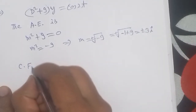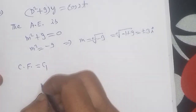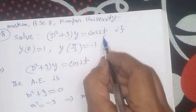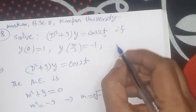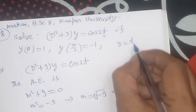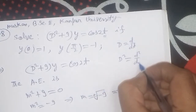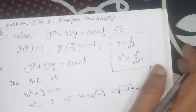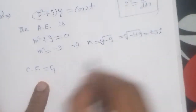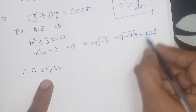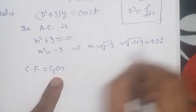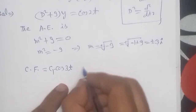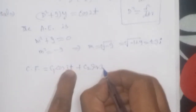Since the roots are pure imaginary, we write the complementary function as: CF = c1·cos(3t) + c2·sin(3t), where t is the independent variable.